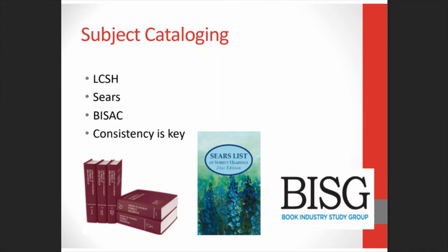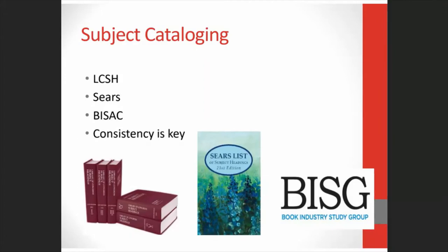Then you have the BISAC, which stands for the Book Industry Subject and Category. It's a newer list introduced by the Book Industry Study Group, a professional organization for the book industry. These are natural language terms, not really subject headings. It was meant for the book industry, but it's being used more and more by public libraries who want to provide a bookstore browsing experience to their patrons. Whichever system your library chooses to follow, it's most important that the headings in your catalog are maintained with national changes so that they stay current — if not, they lose a lot of their effectiveness.